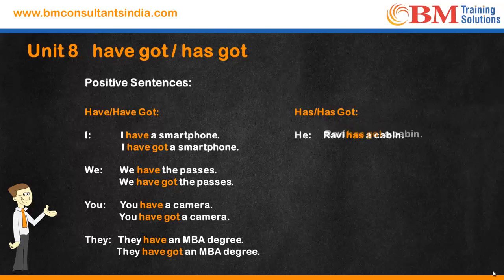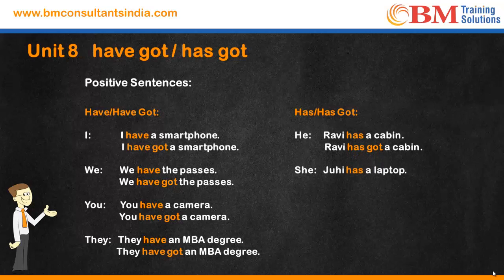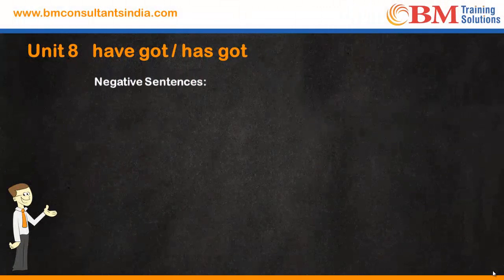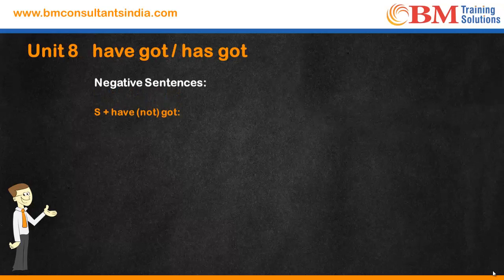Let's look at the use of 'has' or 'has got.' Ravi has a cabin — this is the same as 'Ravi has got a cabin.' For Juhi, the pronoun we use is 'she.' You can say 'She has a laptop' or 'She has got a laptop' — both are the same. 'It has a Bluetooth' — you can also say 'It has got a Bluetooth.'